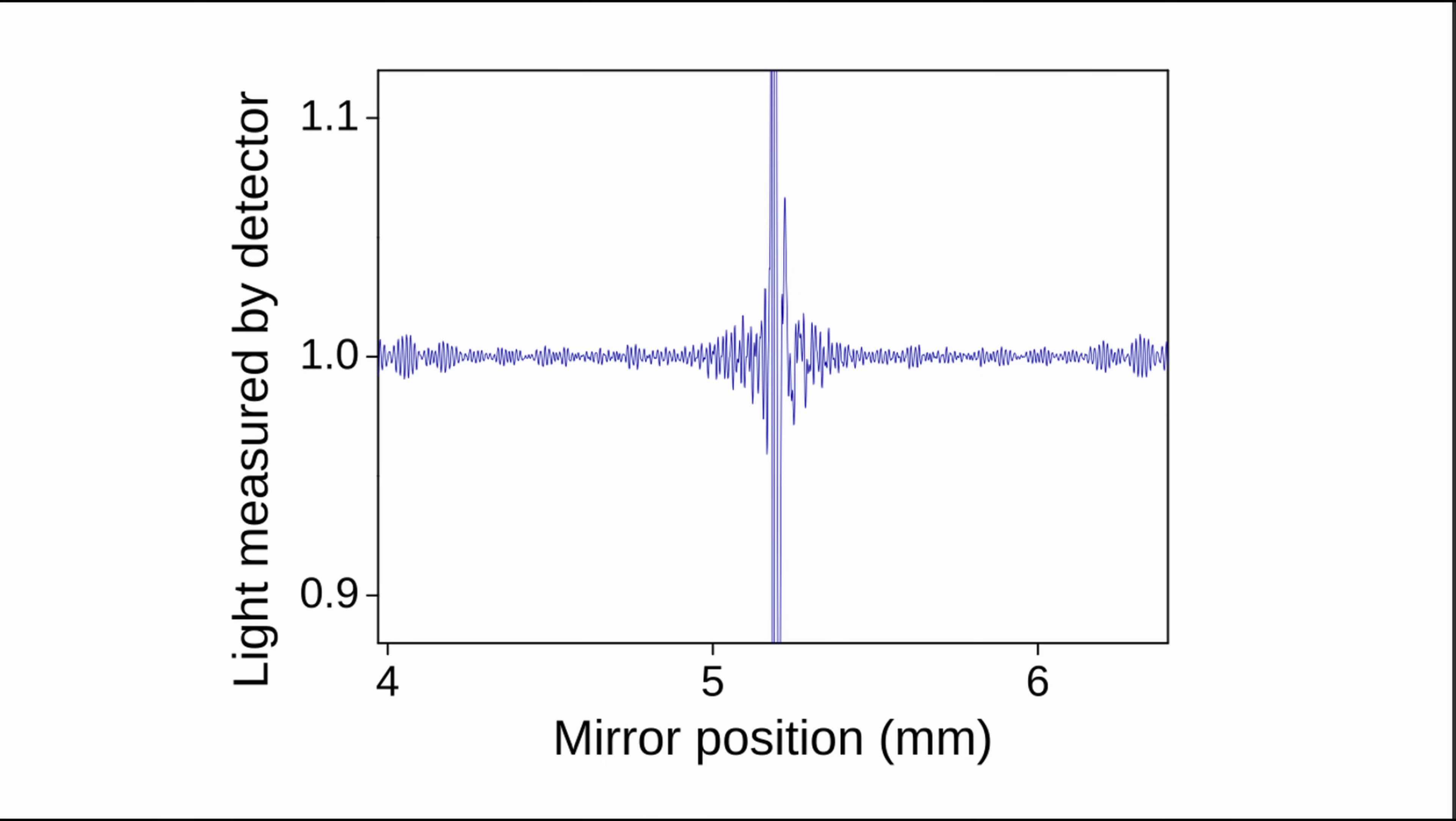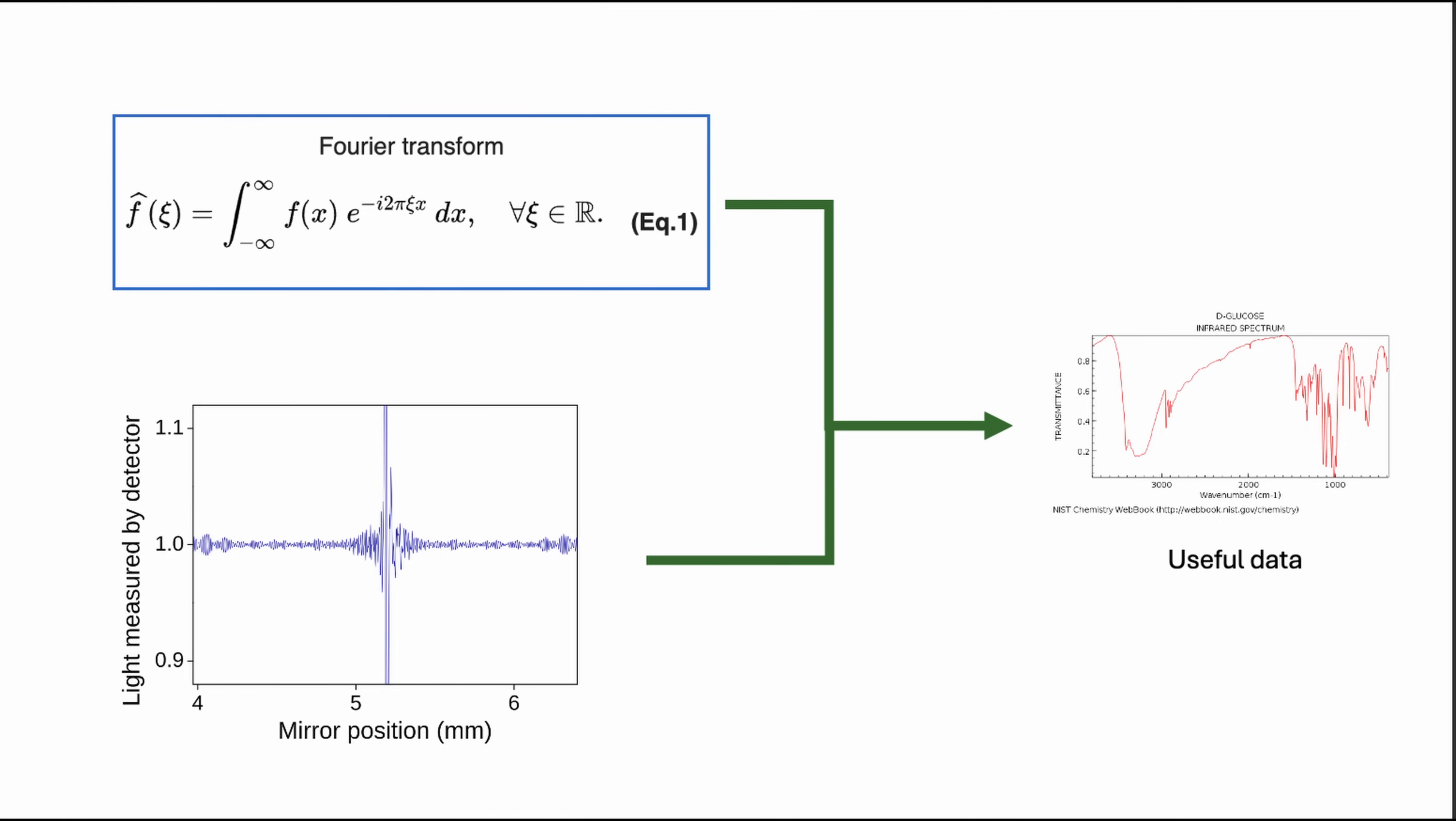Initially, the interferogram appears as a complicated waveform rather than a distinct absorption spectrum. To extract meaningful information, the interferogram is processed through a mathematical operation called a Fourier transform. A Fourier transform mathematically converts the interferogram, a complex wave interference pattern, into a simpler, more understanding form consisting of a single absorbance at a single wavelength. These are then pieced together to form an absorption spectrum.